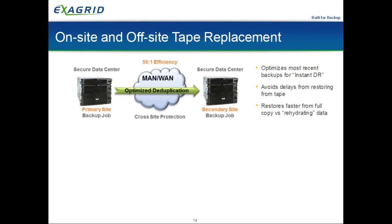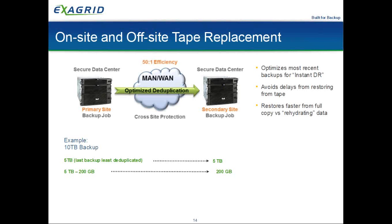If you have a requirement to keep data off-site, we give you the flexibility to replicate to a secondary ExaGrid appliance. Using the same 10 TB example: we shrink it to 5 TB originally. For off-site requirements, after initial seeding of that 5 TB on another ExaGrid appliance we ship that appliance to the DR site. Now the DR site has a copy of that 5 TB. What we replicate over the WAN is only those 2% delta changes — already deduplicated — to the DR site on a nightly basis, taking advantage of very low bandwidth.